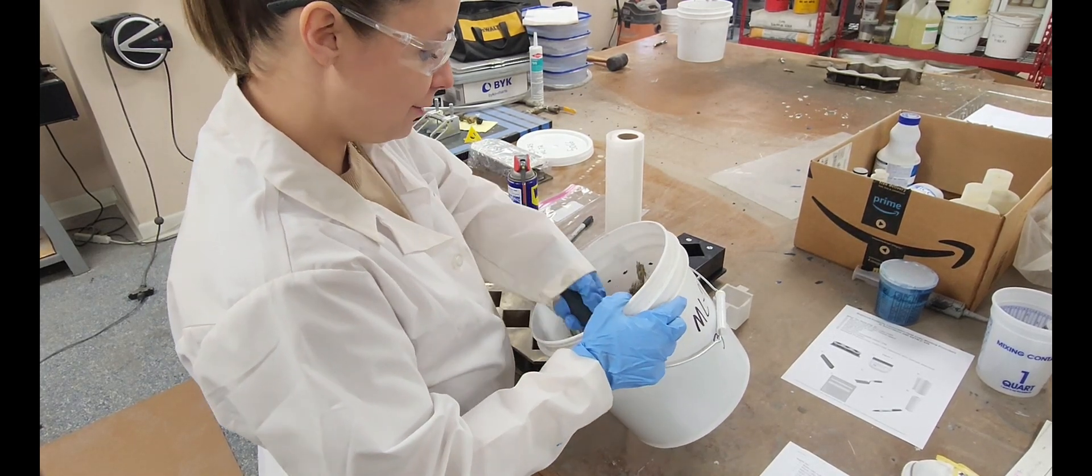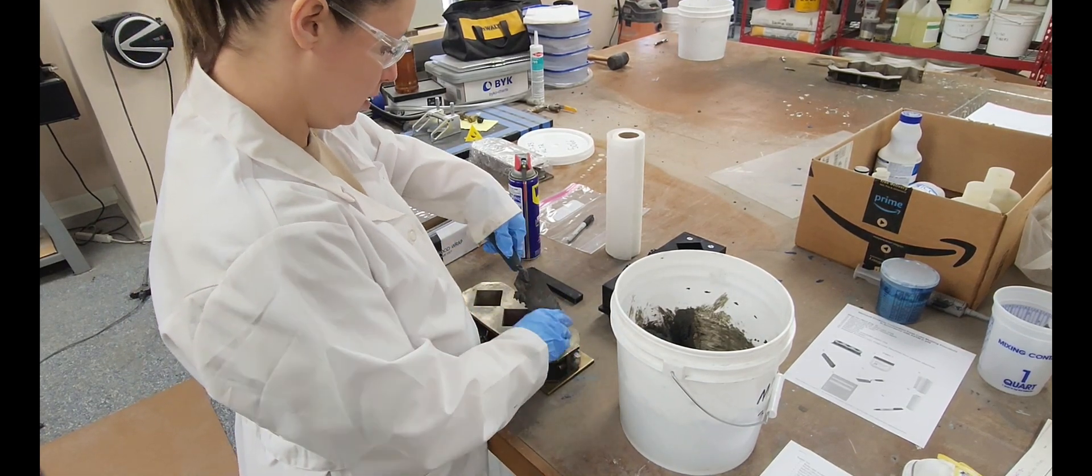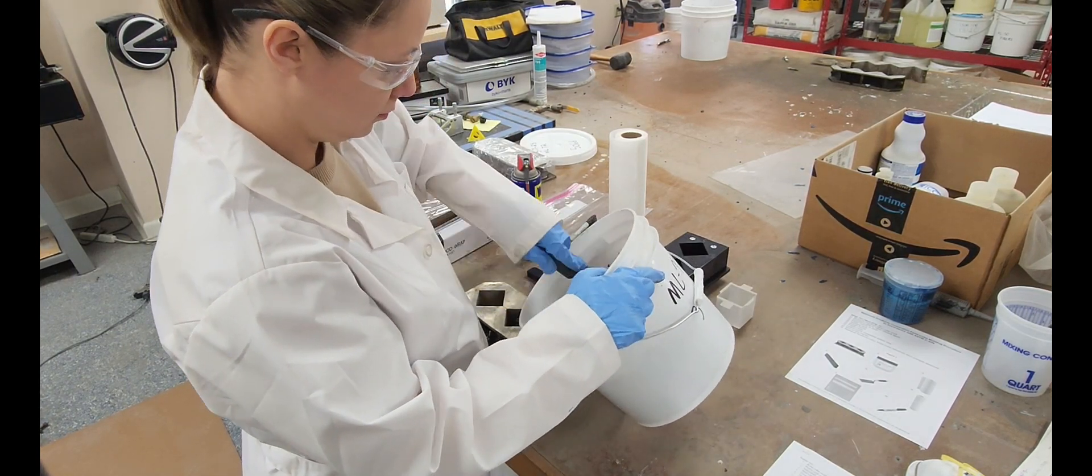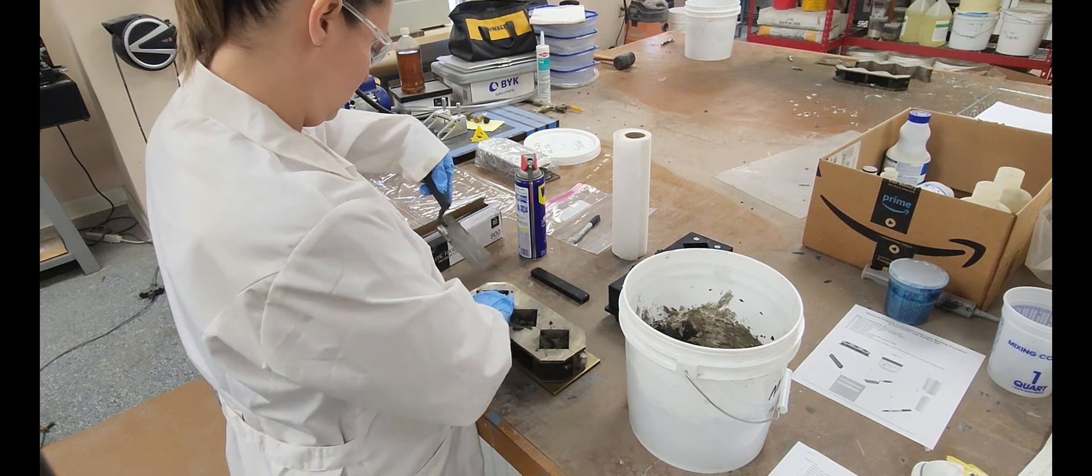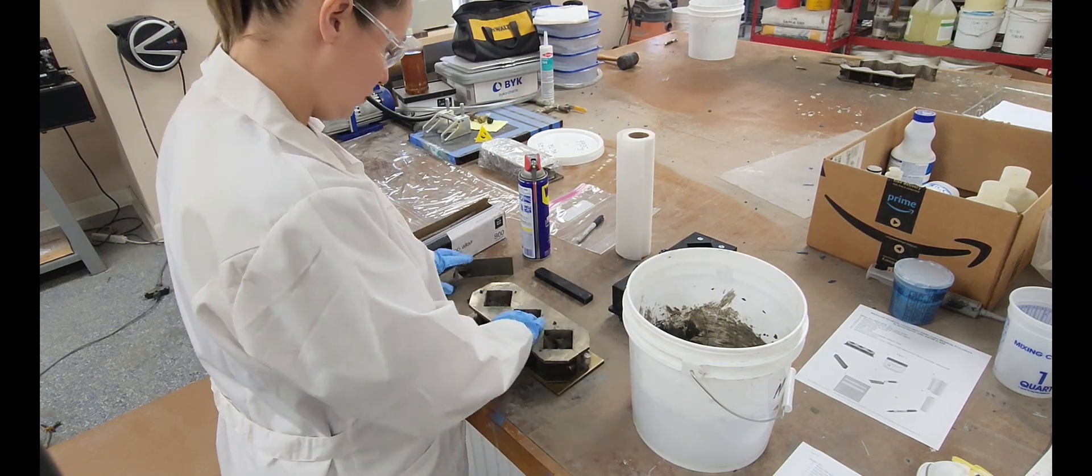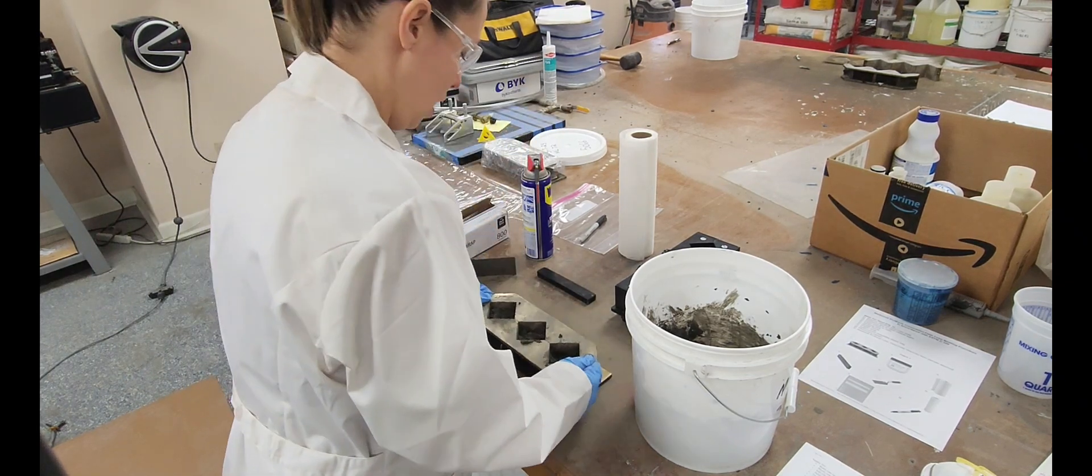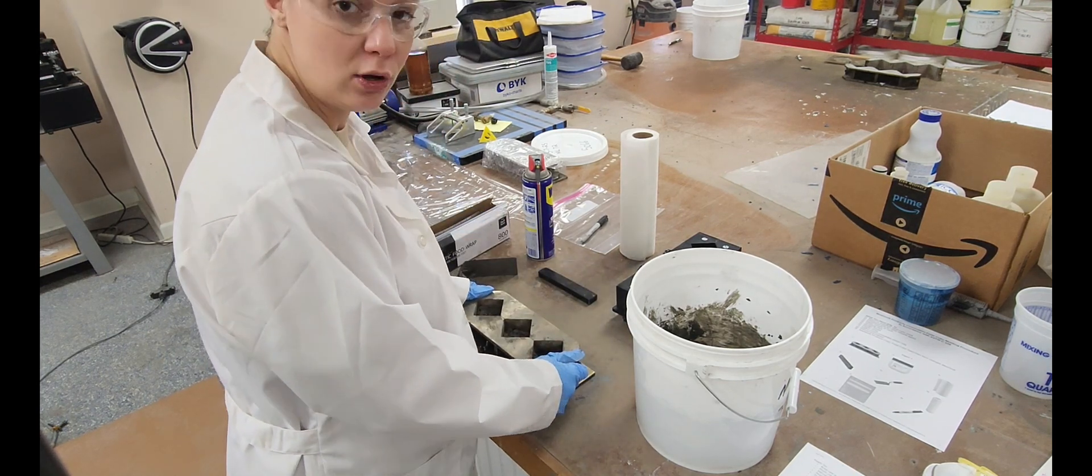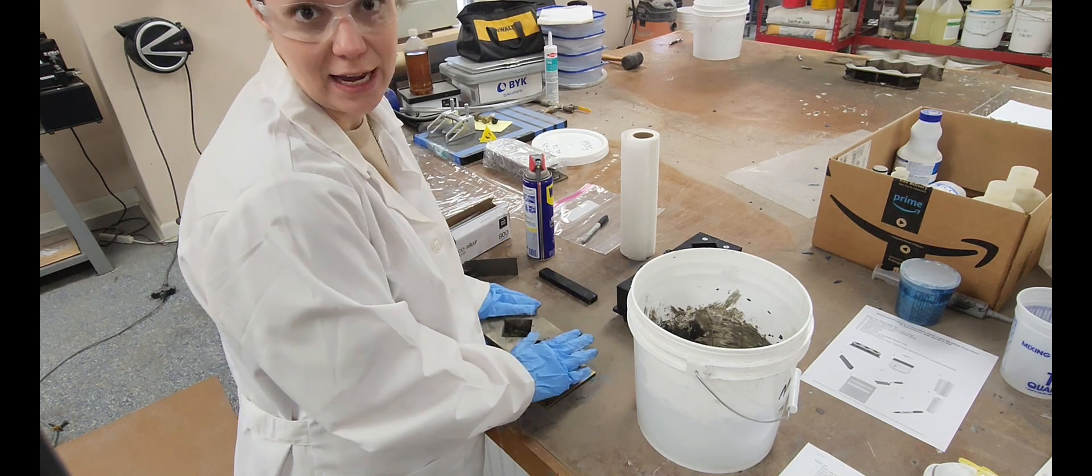We're going to start by filling each of our cube molds halfway, and then we're going to tamp them down. You can see I've got those about 50% full. The first thing I do is slam my cube mold down onto the table so I can get my mortar very good and compacted. But for the sake of saving our ears, we're just going to use the tamping stick for now.